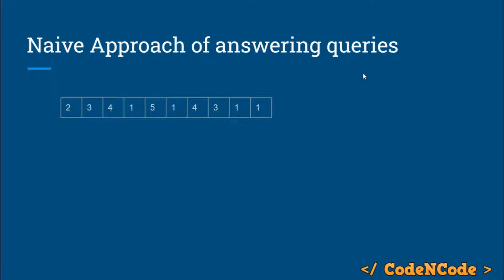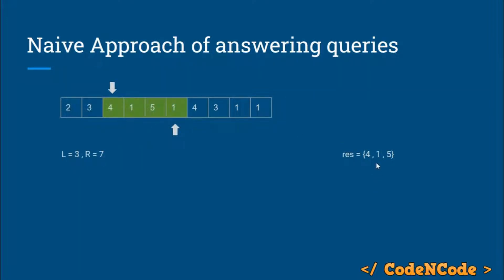Let's talk about the problem: given a range, find the number of unique elements. What would be the naive approach? Suppose the given range is three to seven. We have to find the number of unique elements. It makes sense to use a set — each time just insert the element and at last print the size of the set. We start at position three, insert four, then one, then five, then one again — but inserting one again has no effect since a set does not contain duplicate elements.